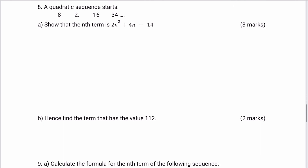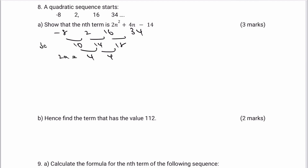We're going to use exactly the same principle as before: the first thing is to write out the first line difference and then the second line difference. The first line differences are 10, 14, and 18, and the second line difference is positive four. That positive four is equivalent to 2a, then 10 is equivalent to 3a plus b, and minus eight equals a plus b plus c.